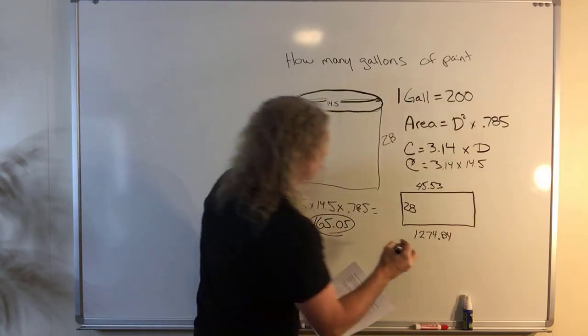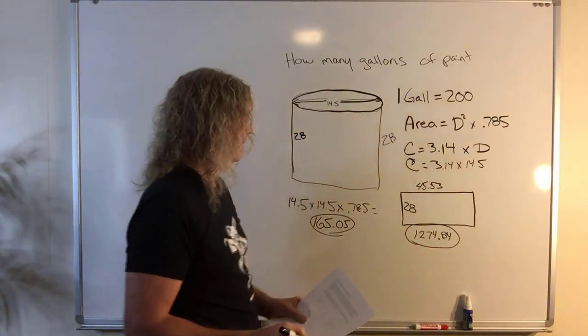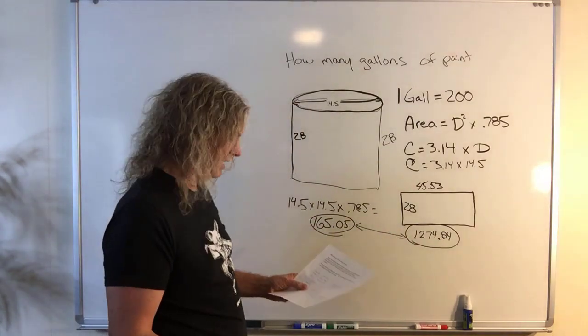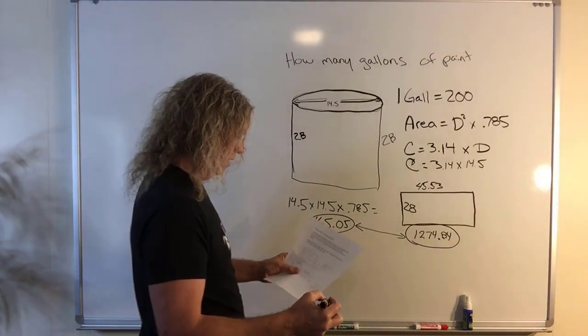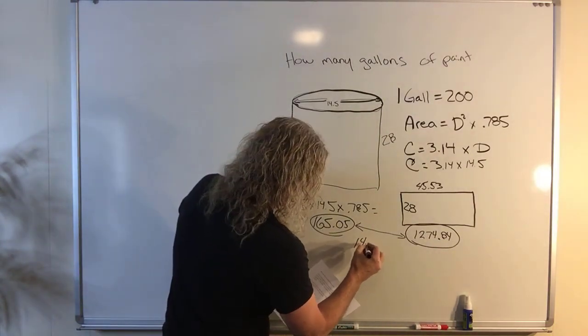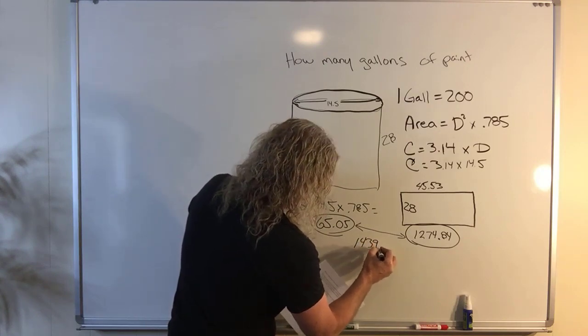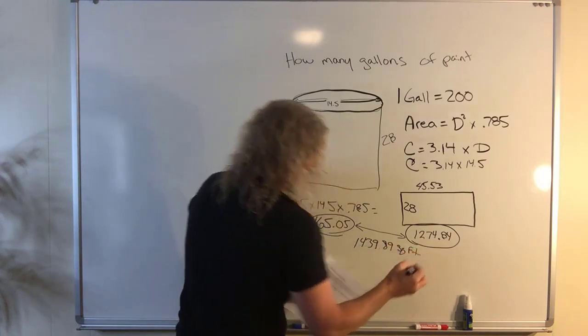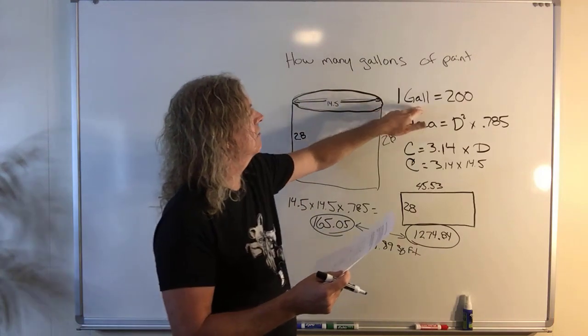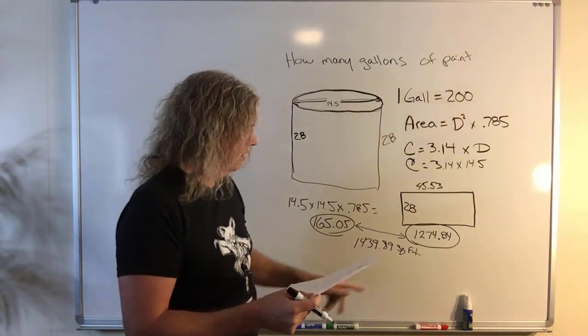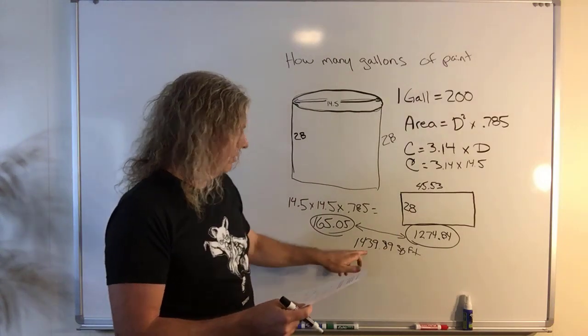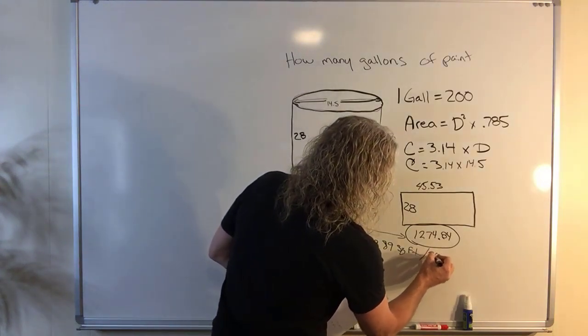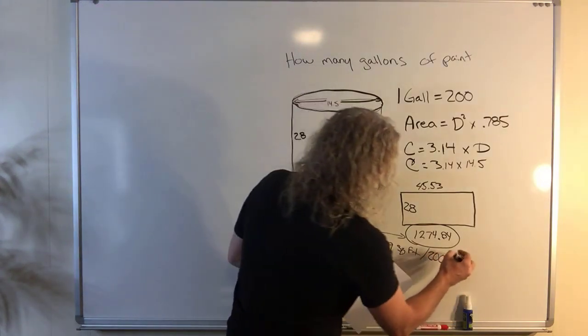So now we've got the two things we need. We've got the square surface of the side of the tank. We've got the square surface of the top of the tank. And we just need to add those two things together. 1,439.89, and that would be square feet. We know that one gallon of paint covers 200 square feet. So then we just divide that by 200. 1,439.89 square feet divided by 200, and it is 7.2 gallons.